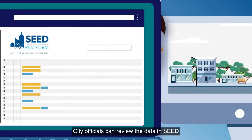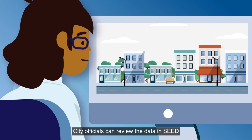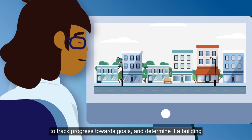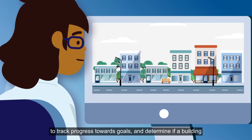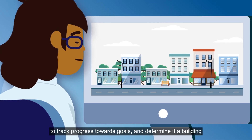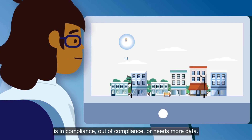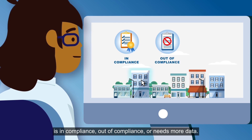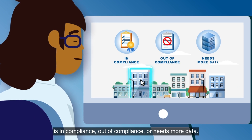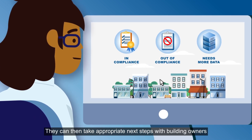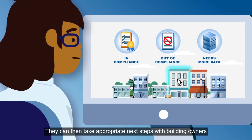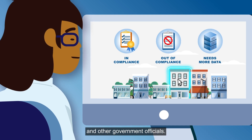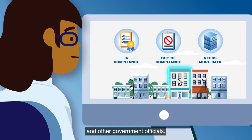City officials can review the data in SEED to track progress towards goals and determine if a building is in compliance, out of compliance, or needs more data. They can then take appropriate steps with building owners and other government officials.